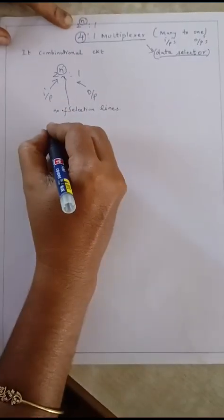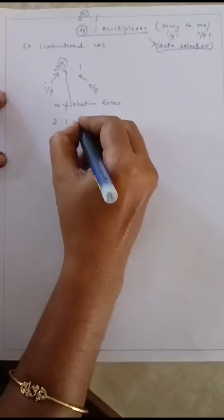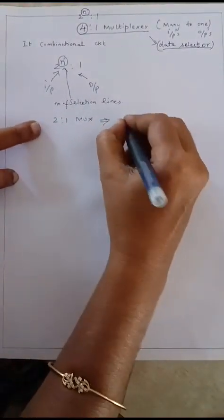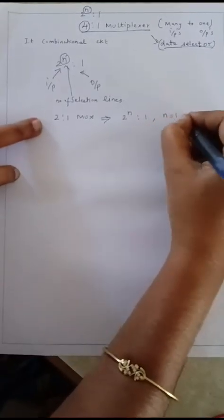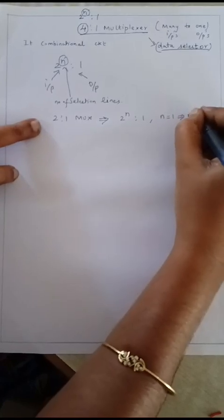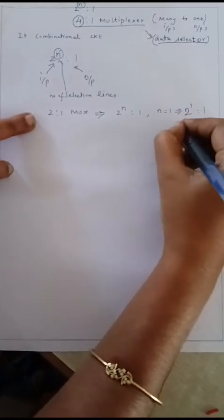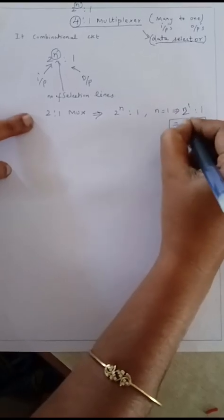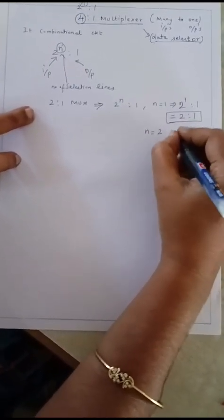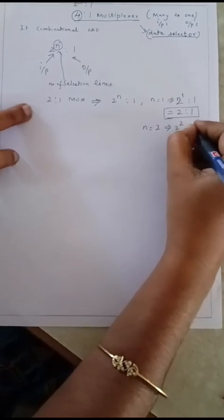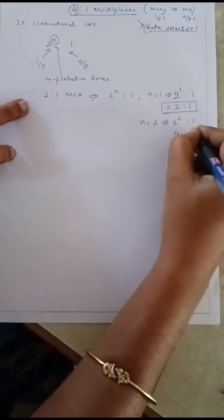For example, if I want to make a 2-to-1 multiplexer, I assign n equal to 1. So 2 to the power 1 gives 2-to-1, meaning I can design a 2-to-1 multiplexer. If I increase n to 2, then 2 to the power 2 equals 4, so a 4-to-1 multiplexer can be designed.